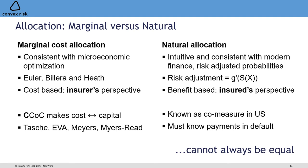The two allocations cannot be equal, because one depends on how payments are allocated in default and the other does not. This was actually a bit of a surprise: John was taking the marginal cost view, I was taking the natural view. We did our algebra through quite different routes and got ever so slightly different answers — they only vary in the default states, because I had made an assumption about how payments were allocated in default.